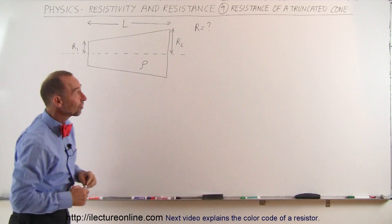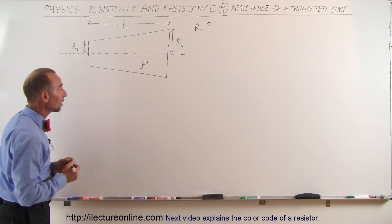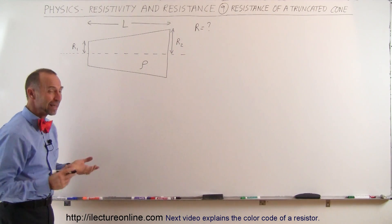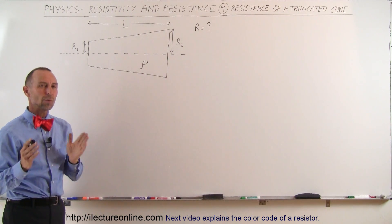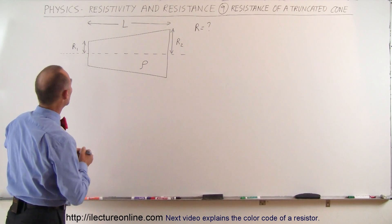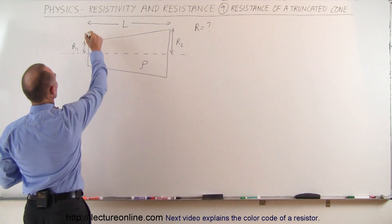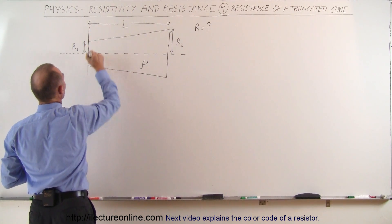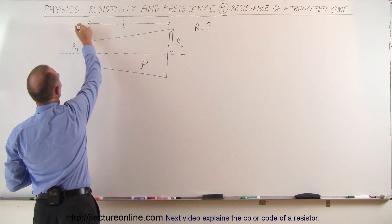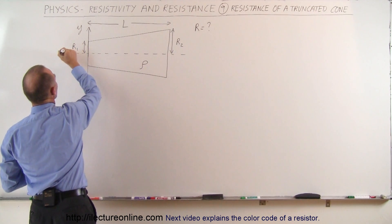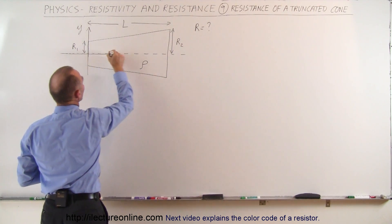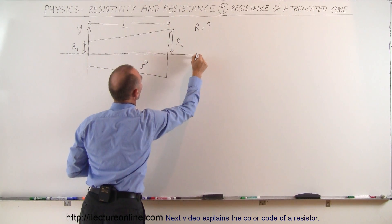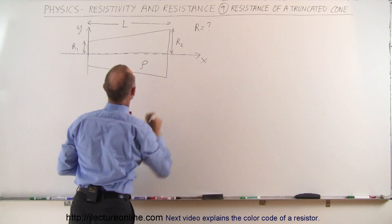Let's try to find the resistance of this object. First of all, to make things easier, I think we want to line this up on an xy-coordinate system. So let's imagine that this here is the y-axis, and that this here is the x-axis going right through the middle of the cone.